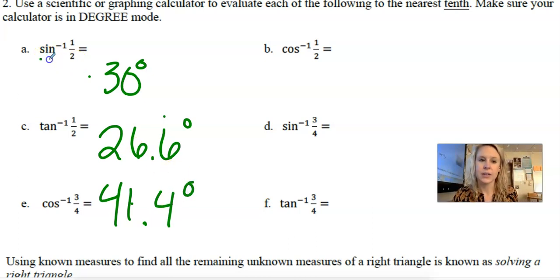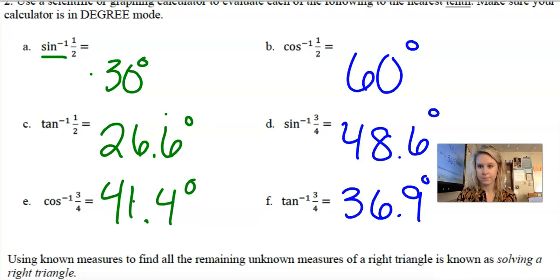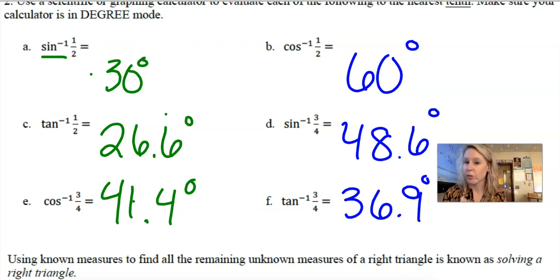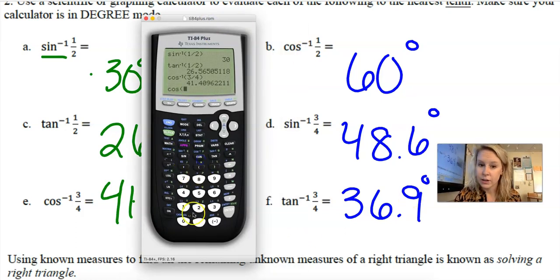That is how you type inverse sine, inverse cosine, and inverse tan into the calculator. Now you try parts b, d, and f — press pause and try those. You should have gotten 60 degrees, 48.6 degrees, and 36.9 degrees. If you have questions on rounding or how to type that in, let me know. Make sure you didn't just do, for example, cosine of one half — make sure you typed the inverse cosine: second cosine.